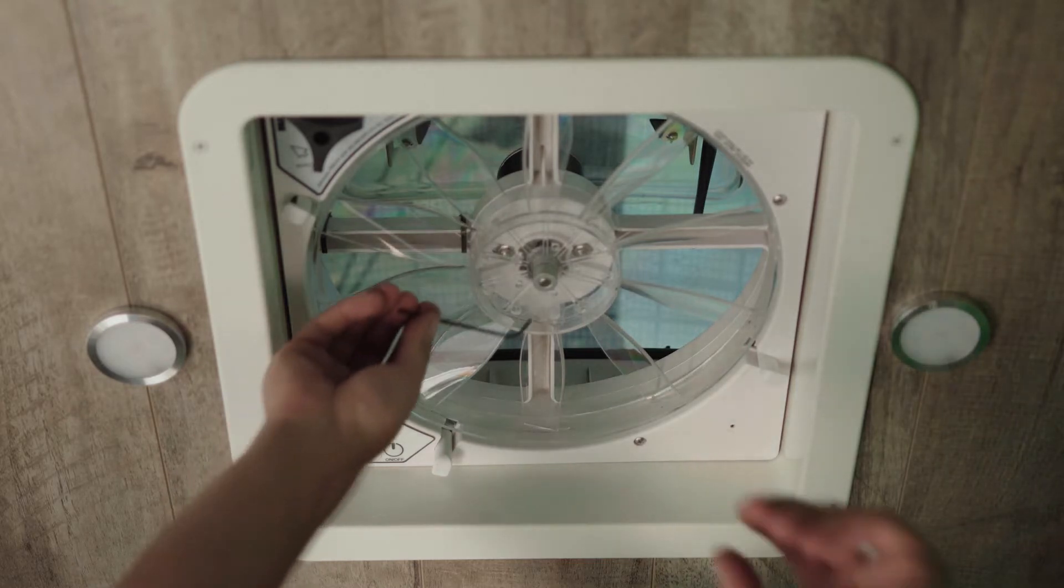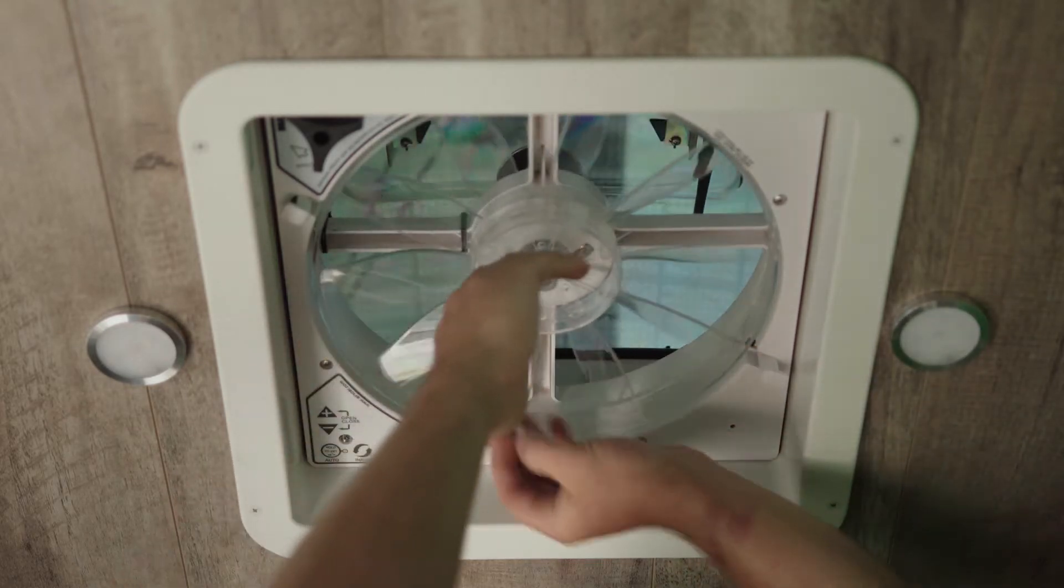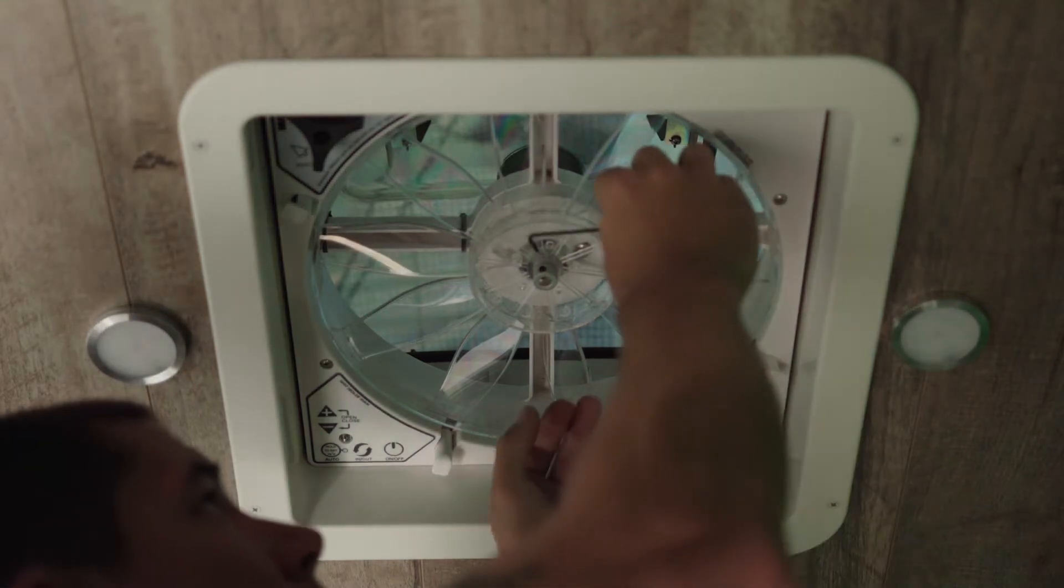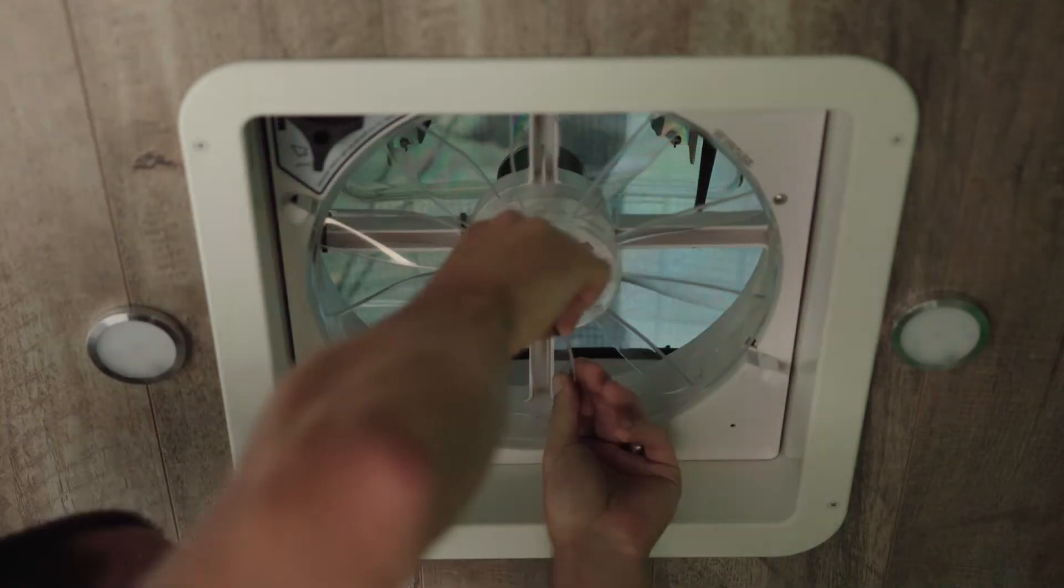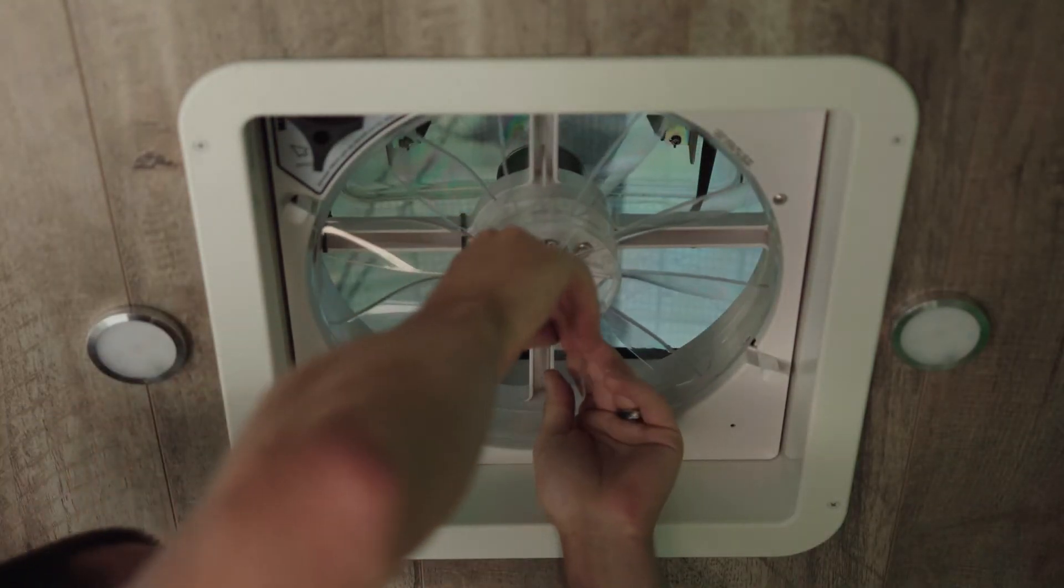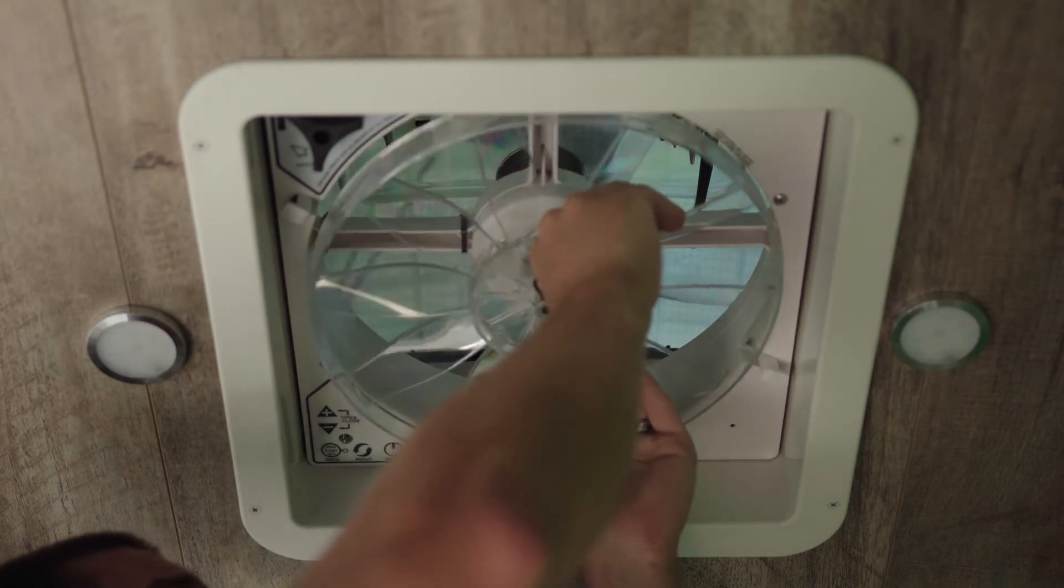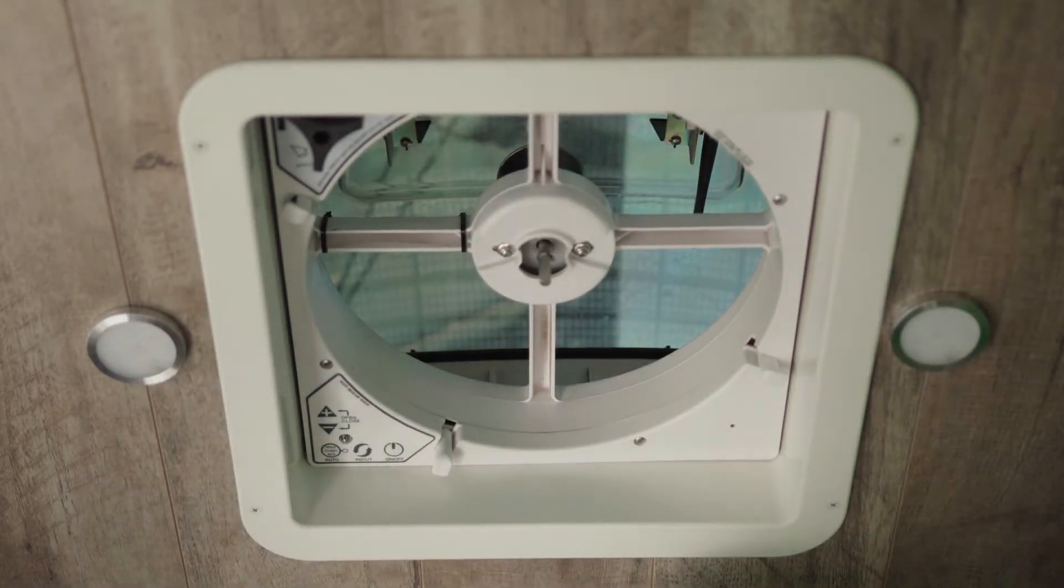So now our next step is to take the hex head out of the fan, which is a 2.5mm. Let's put our Allen key inside and just loosen it enough that the fan will slide right off.